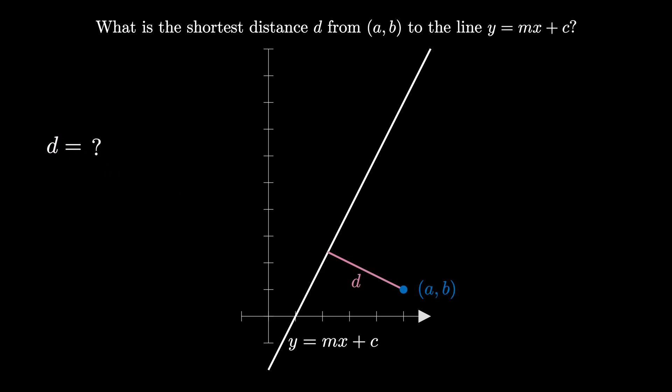Let's see how to find this length using geometry. The vertical line connecting the point to the given line has coordinates given by plugging a into the equation, so its coordinates are a, ma plus c. The length of this vertical line is given by the absolute value of ma plus c minus b, which is the difference of the y coordinates.